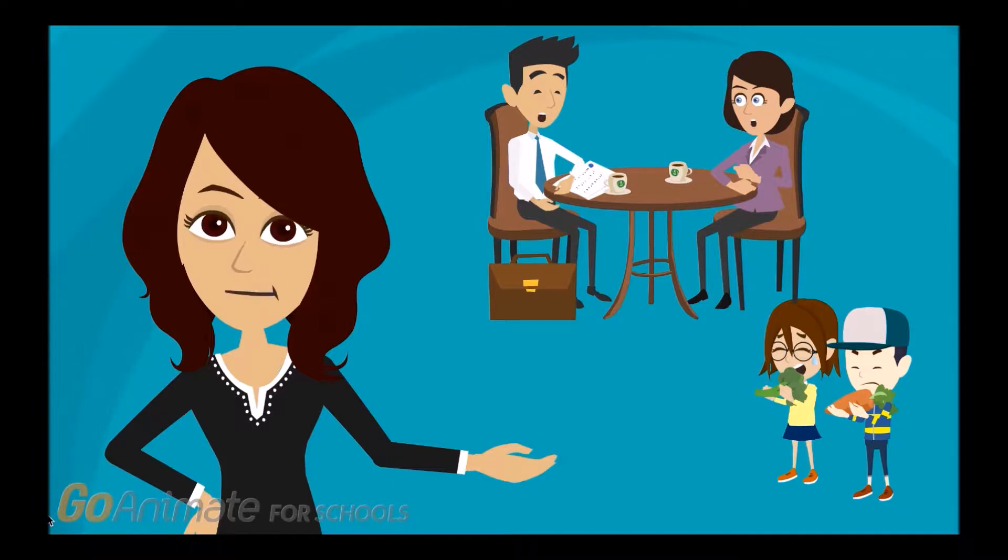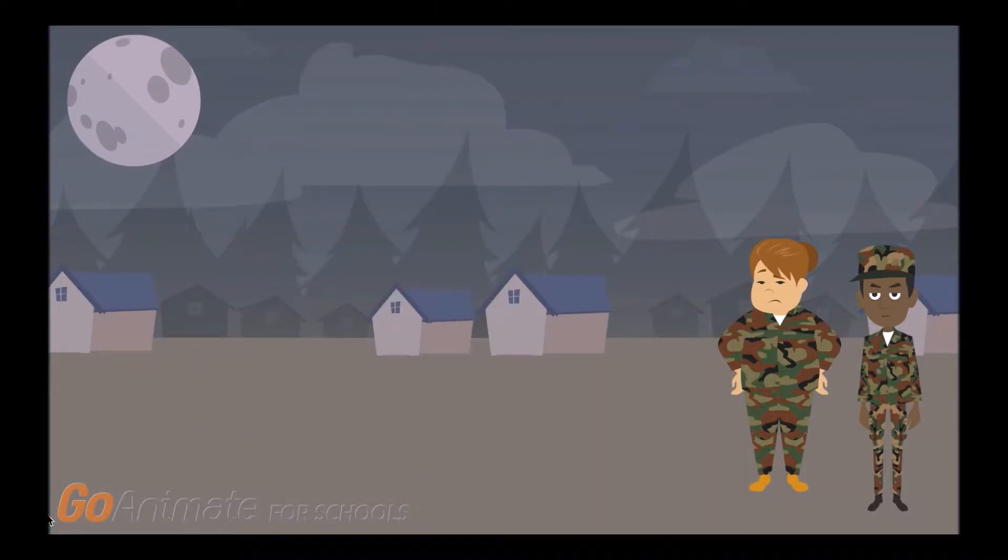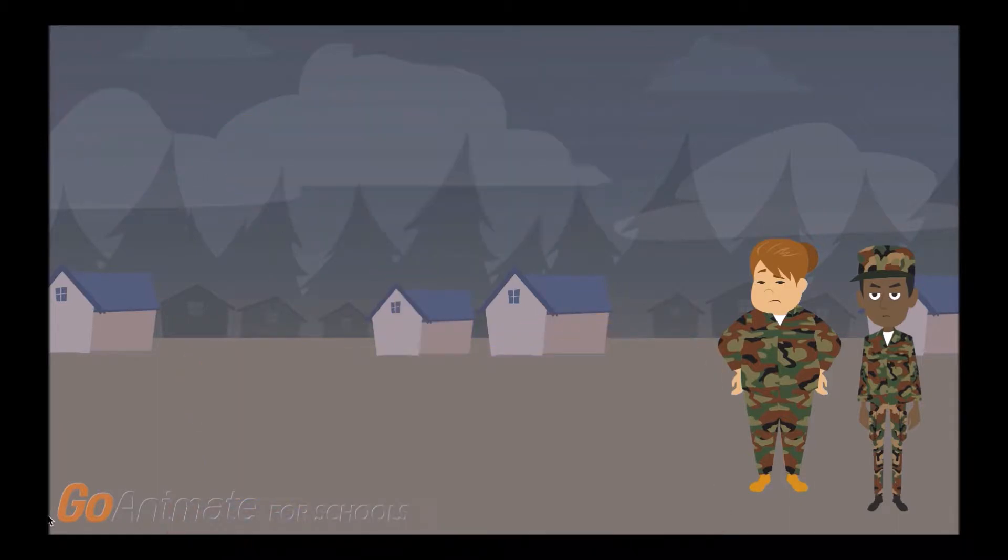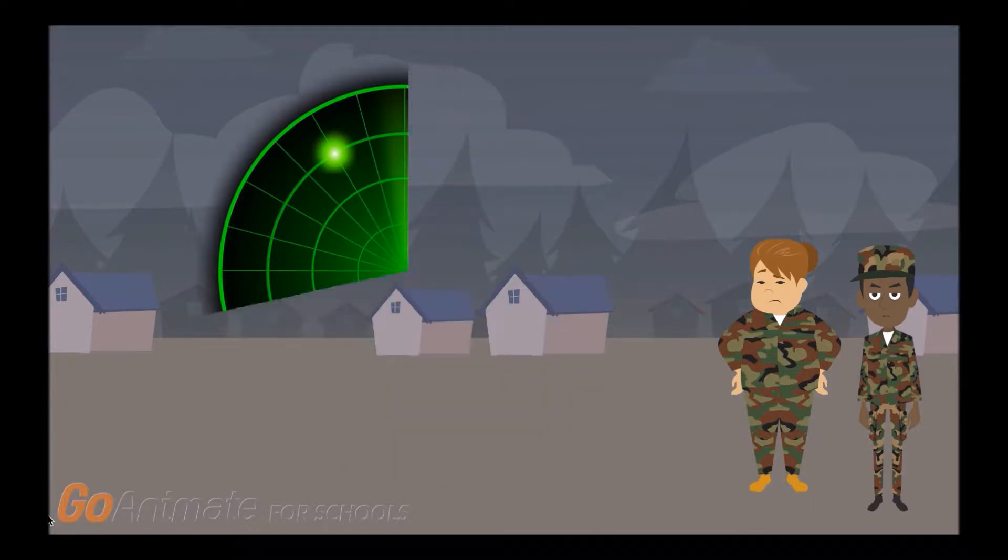This myth originates from World War II propaganda. Carrots were claimed to be responsible for allowing the British to shoot down enemy planes at night time, all to conceal the development of a new radar technology actually responsible.